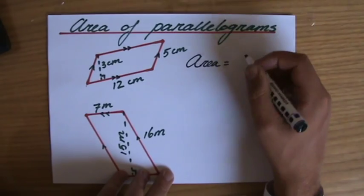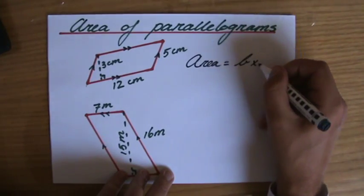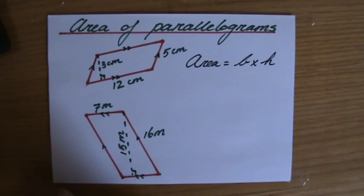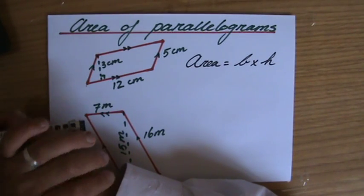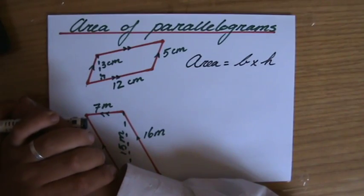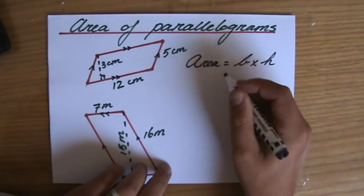The area of a parallelogram is the base times the height. Whenever you say base times height, you should tell yourself that the base and the height make an angle of 90 degrees.